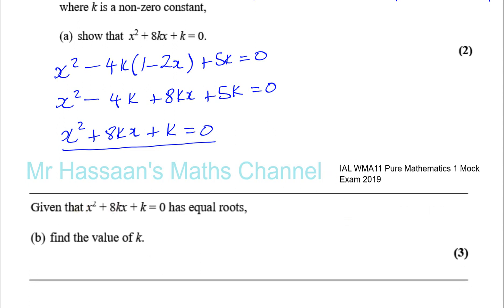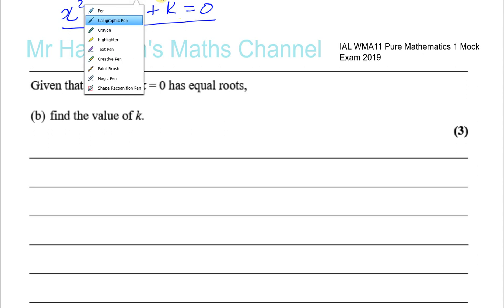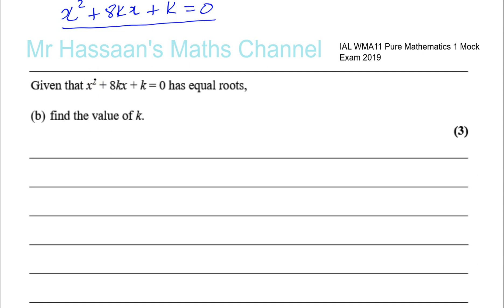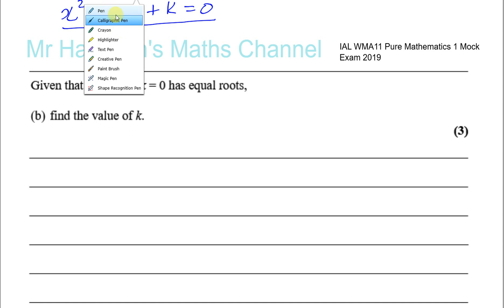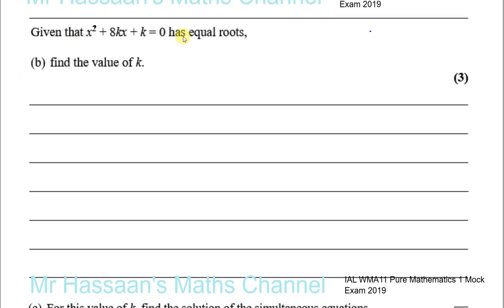It says: given that x squared plus 8kx plus k equals 0 has equal roots — that's x squared — find the value of k. Basically, we know that this has equal roots, which means there is a root that is repeated.